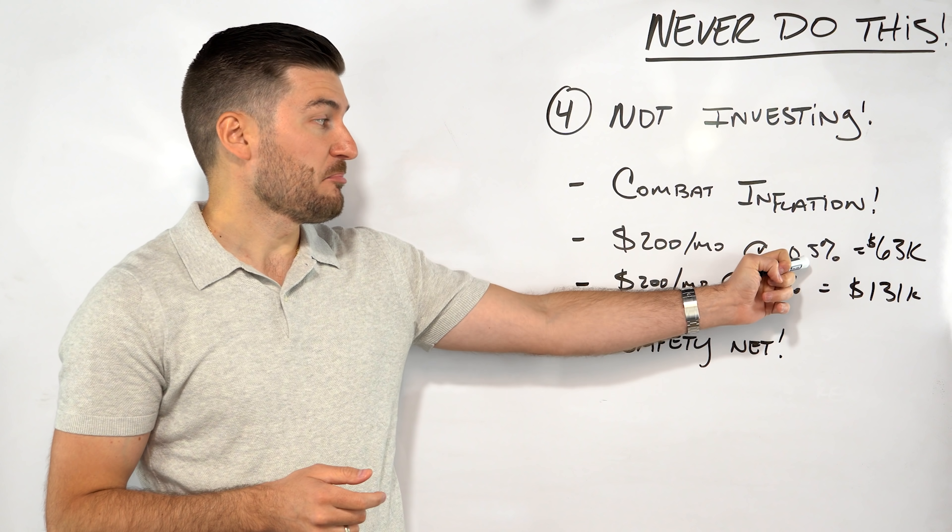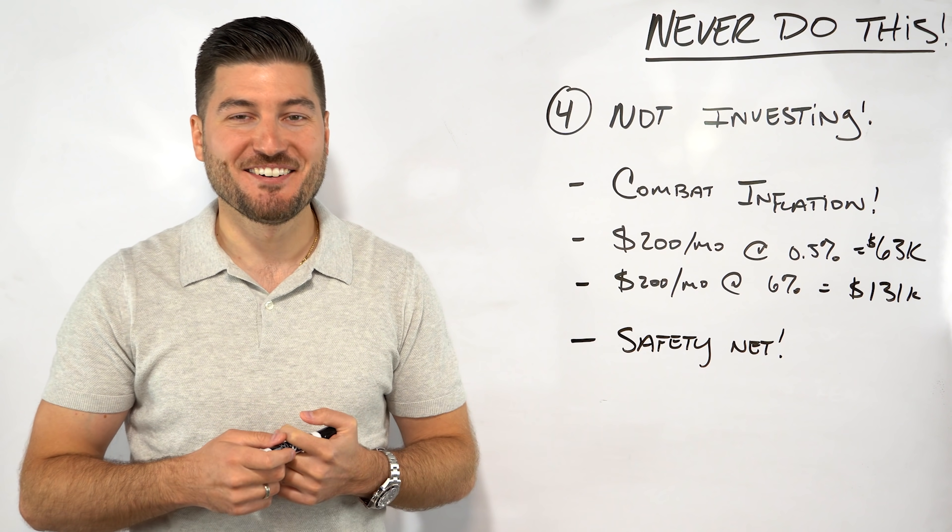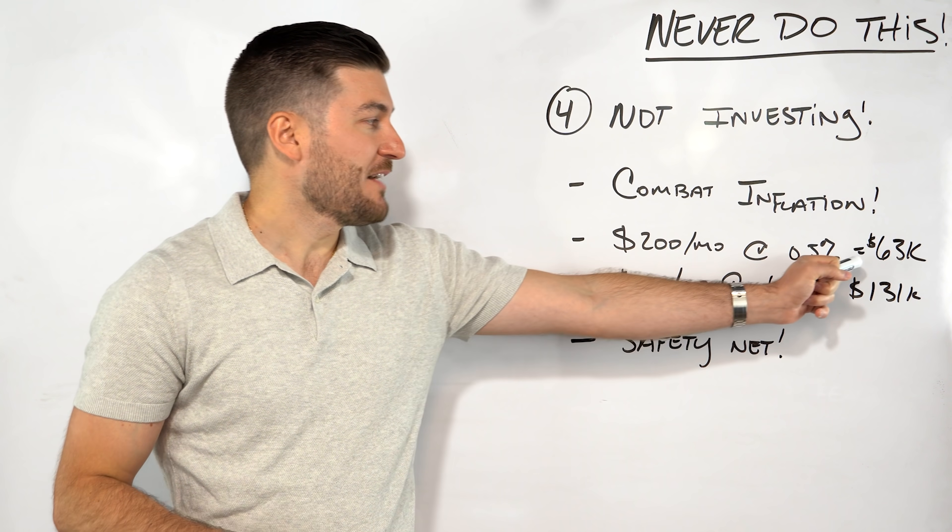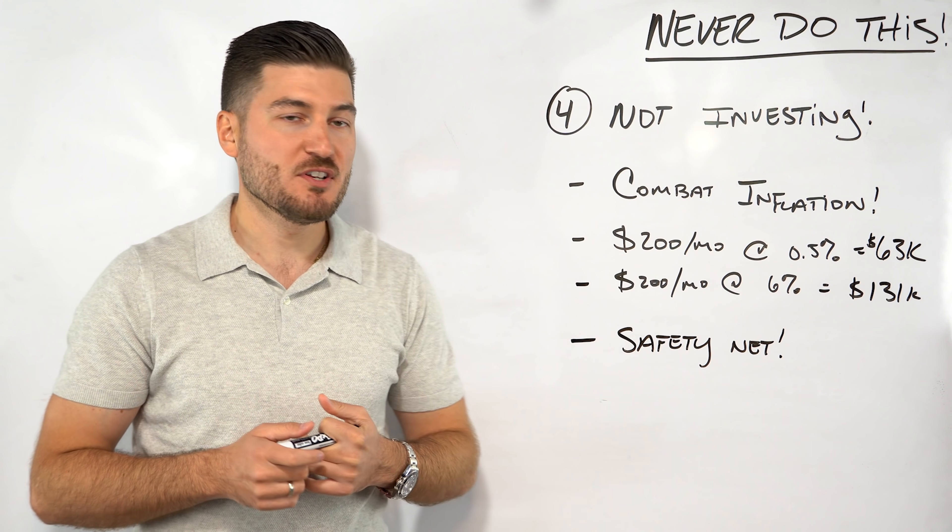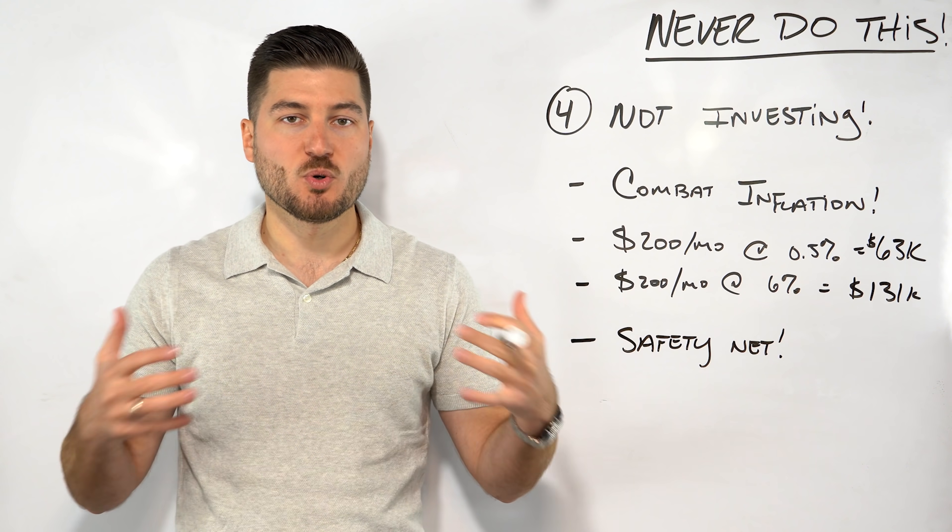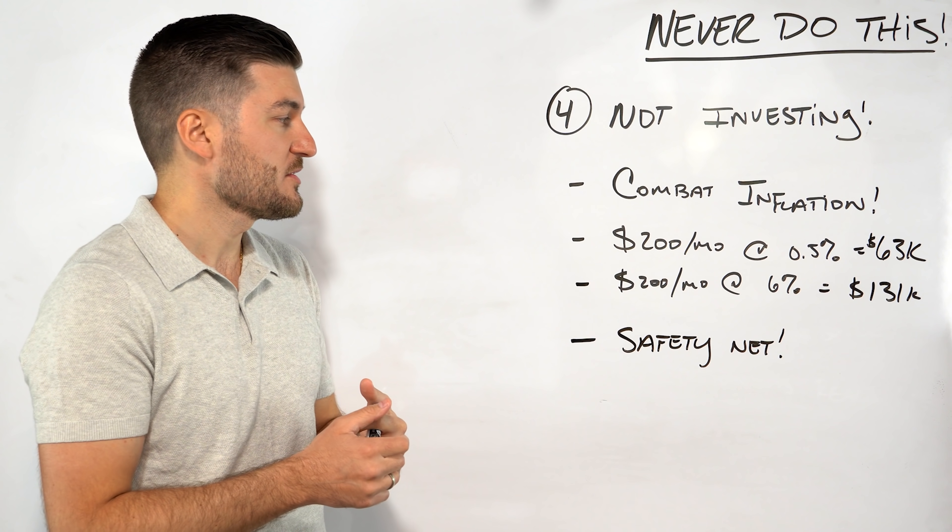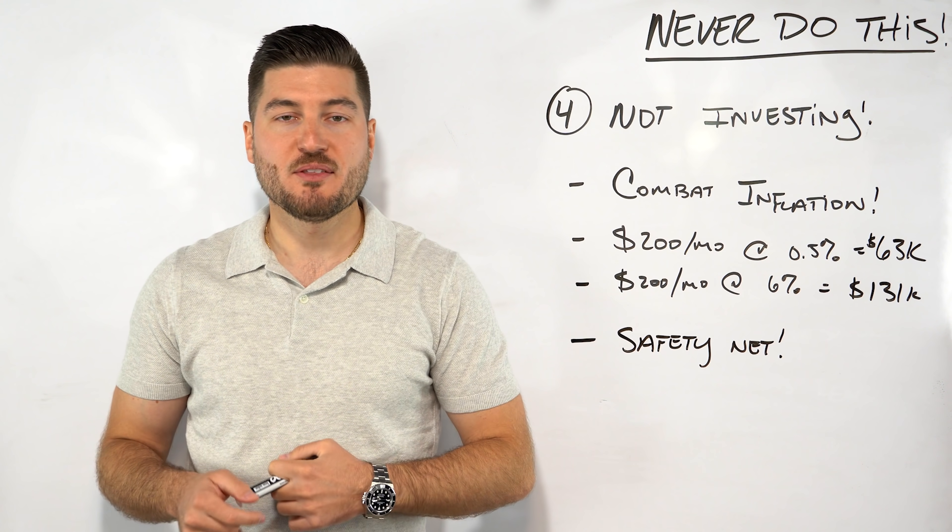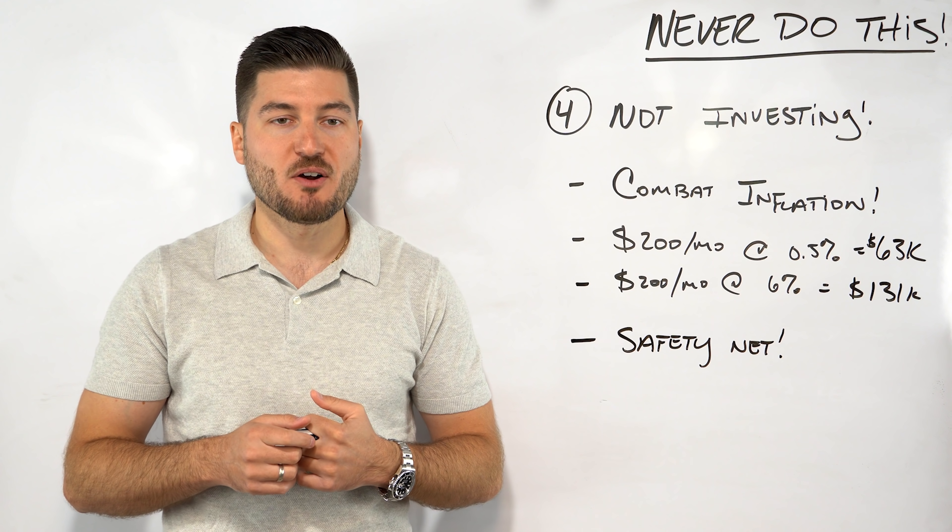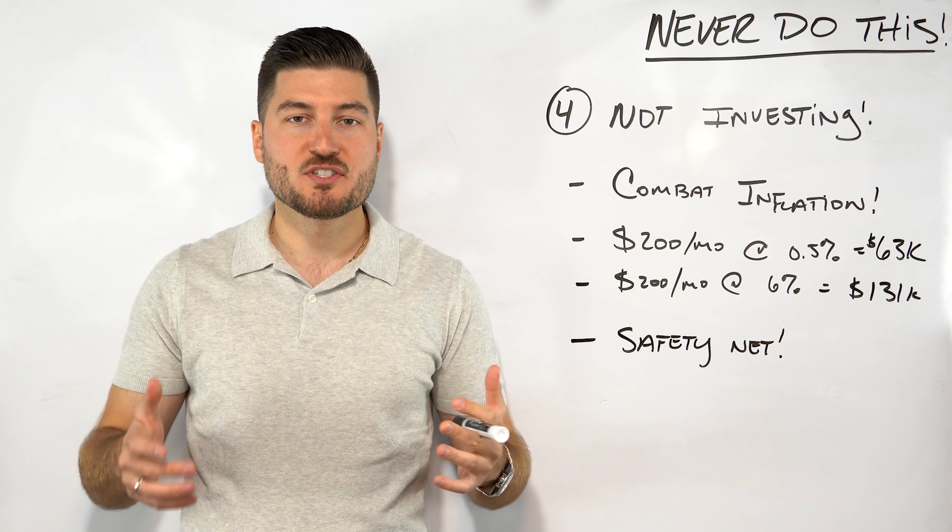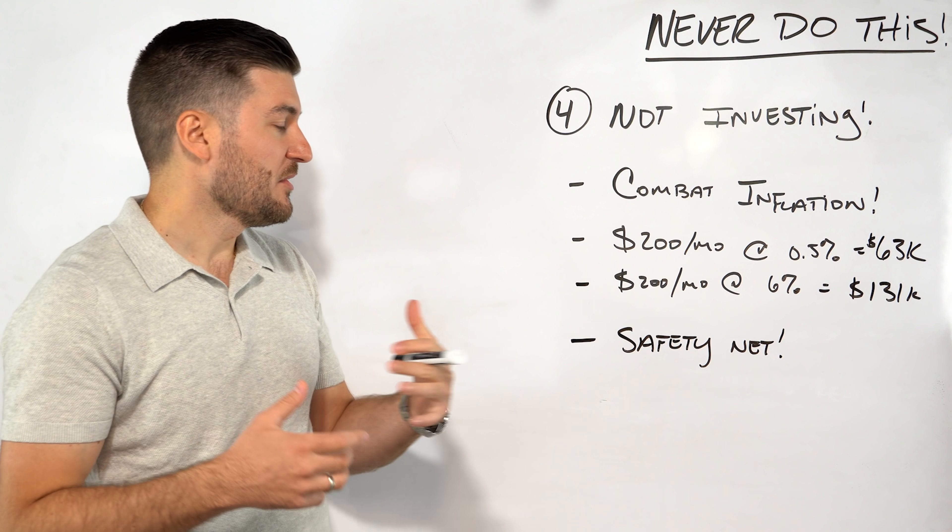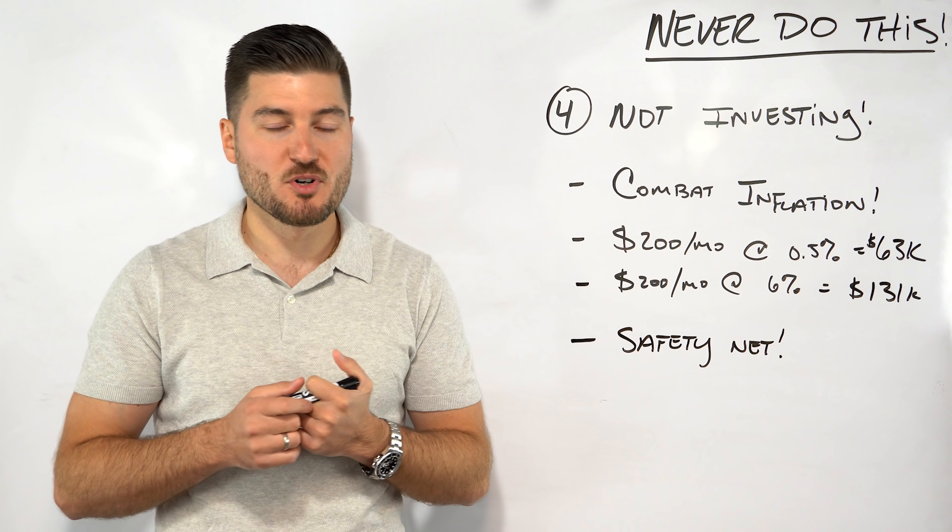Here's a quick example. If you saved $200 a month at 0.5% in a high yield savings account, and I say that in quotes because people aren't even getting 0.5% right now, you would have $63,000 after 25 years. If you take that same $200 a month at a modest 6%, whether it's invested in a total stock market fund or S&P 500 fund, at the end of 25 years you would have $131,000. It is a much bigger difference combating inflation and retaining your purchasing power. If you want to learn more about inflation, check out the video I just did with Robert Breedlove.